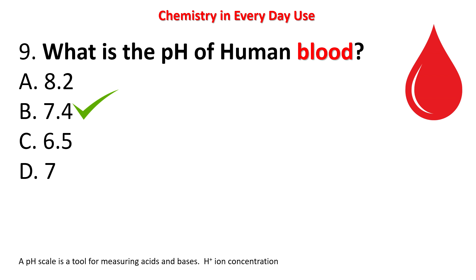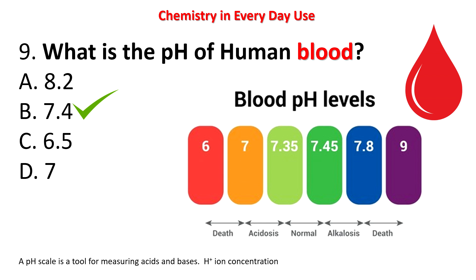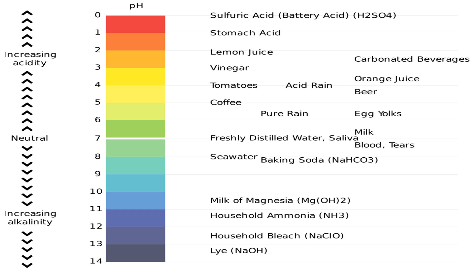You should understand that a pH scale is a tool for measuring acids and bases — the H+ ion concentration is called the pH value. Human blood pH is 7.4, which is normal. If it goes to 6 or 9, it is fatal. 7 is neutral; above 7 is alkaline; less than 7 is acidic. For reference: sulfuric acid is ~0, stomach acid is 1, lemon juice is 2, vinegar is 3, carbonated beverages and tomatoes are ~3-4, coffee is ~5.